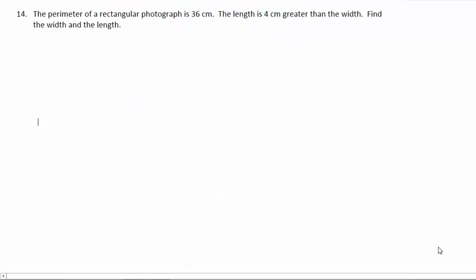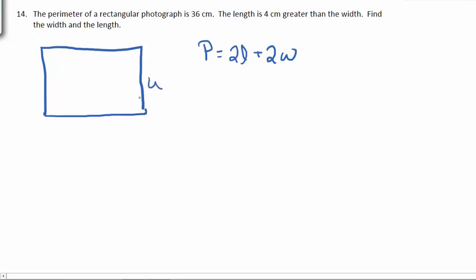Number 14. The perimeter of a rectangular photograph is 36 centimeters. The length is 4 centimeters greater than the width. Find the width and the length. So I'm going to start with drawing a picture. We know that this is a rectangle. And we're looking at the perimeter, which is found by 2 times the length plus 2 times the width. The only thing we really know about this is that the length is 4 centimeters greater than the width. Greater than means addition, so 4 plus W. The perimeter is 36, and we know that the length is 4 plus W, plus 2 W.